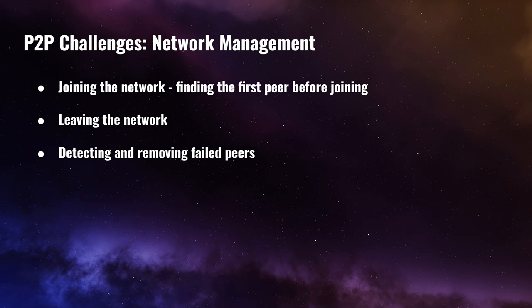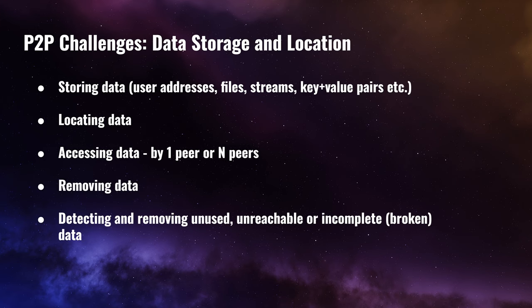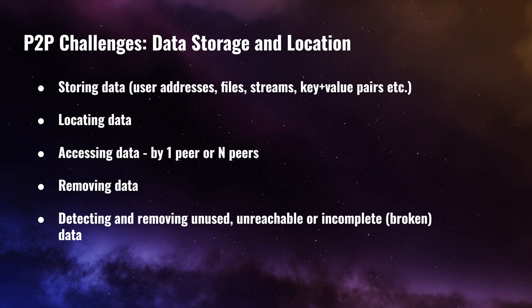When it comes to data storage and locating data in the peer-to-peer network, the challenges include: storing data such as user addresses, files, streams, and key-value pairs; locating that data again once it has been scattered across the network; accessing data by one peer or many peers simultaneously — for example, streaming a movie to many peers like Netflix; removing data that is no longer needed; and detecting and removing unused, unreachable, or broken data from the network.